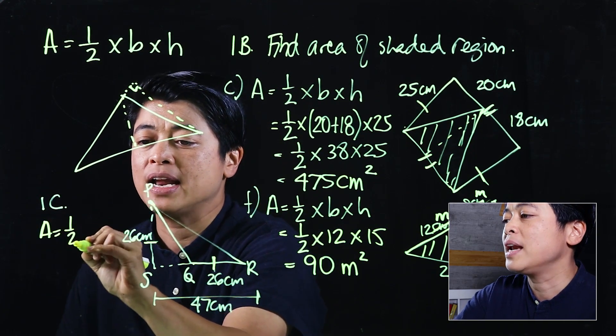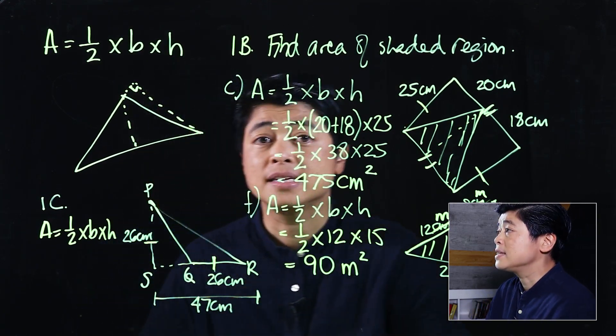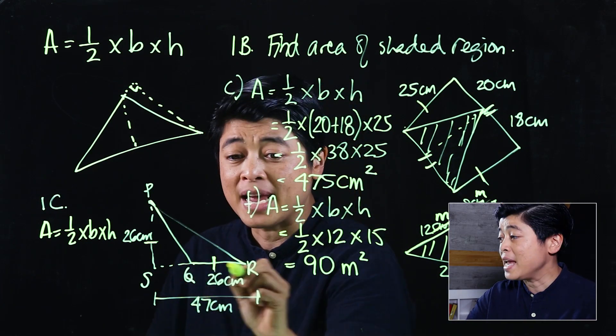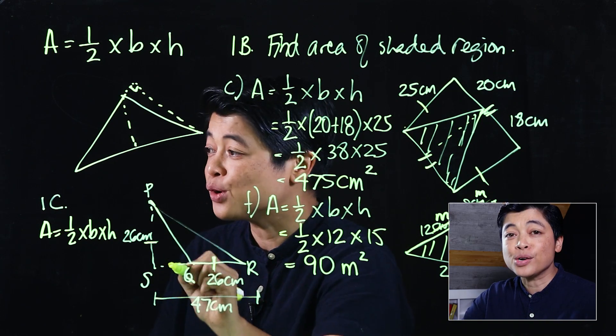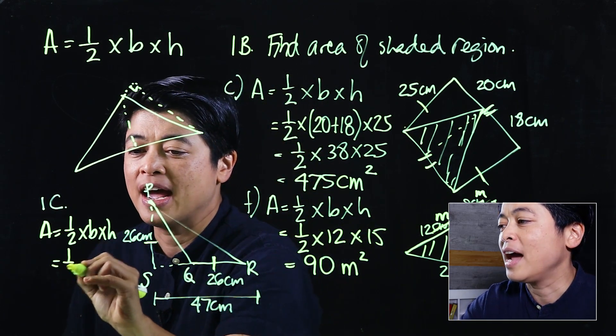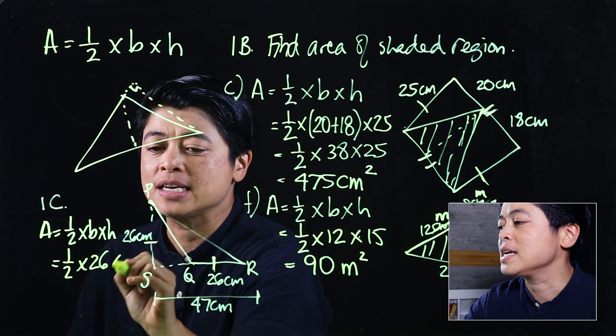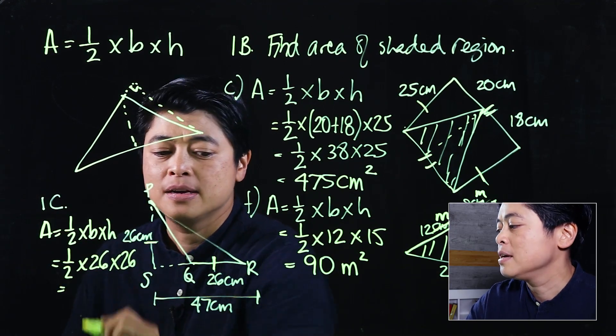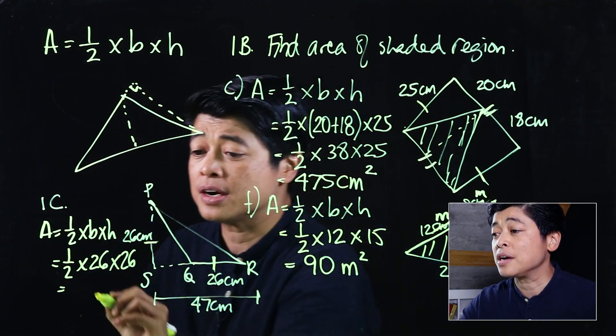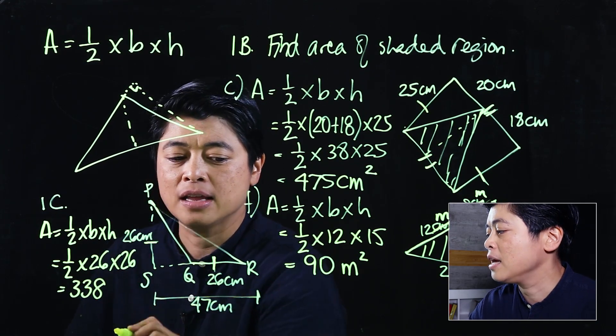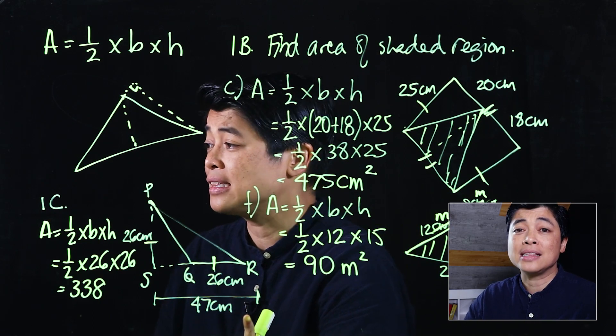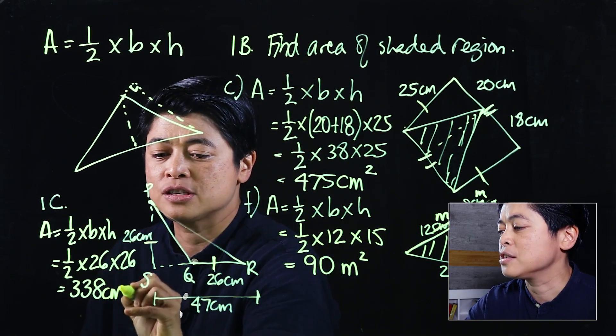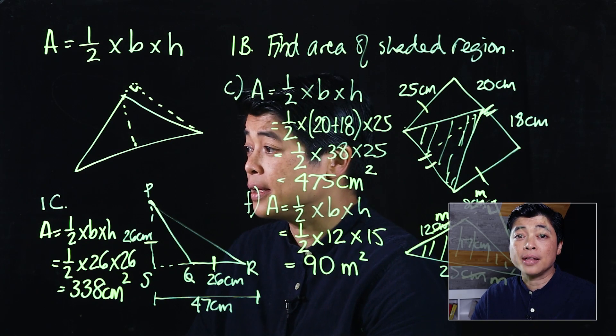So the formula is still one half times base times height, and in this case the base would be 26 and the height also will be 26. So one half times 26 times 26—putting it in our calculator, we should get 338. Since the unit of measurement is in centimeters, our final answer should have centimeters squared.